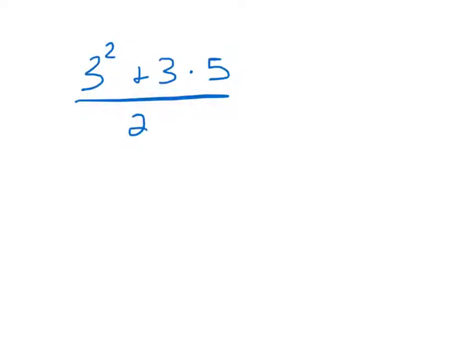This is a division symbol. And over here is multiplication. So, what I want to do is try to simplify as much as I can. And the first step here is to deal with this number. So, that'll be 3 squared. So, that'll be 9 plus 3 times 5 over 2.